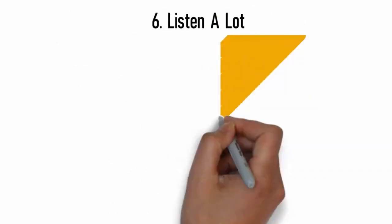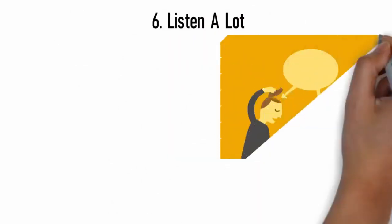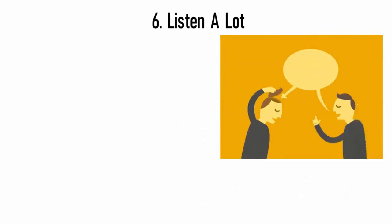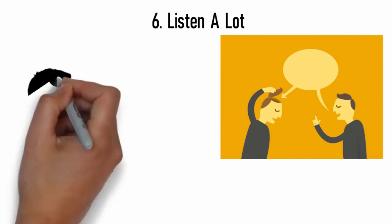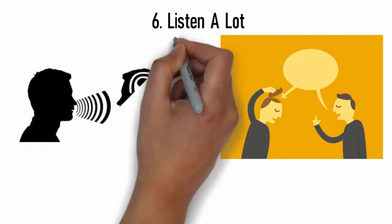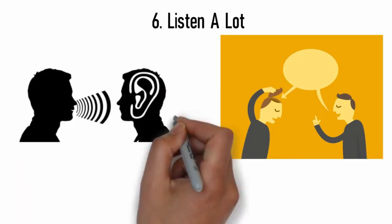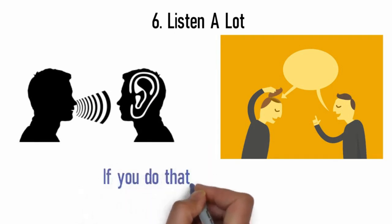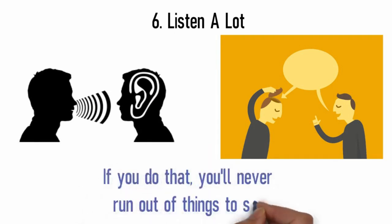6. Listen a lot. Figuring out how to stop running out of things to say to women is simple. Listen. Listen to what women talk about, ask questions that are related to their concerns, and listen more. You may not say a lot when you're with someone if you ask questions about what they care about. How do you find out what they like? Listen to them, listen to what they talk about, listen to what they share with friends, and focus on asking them things related to those things. If you do that, you'll never run out of things to say.